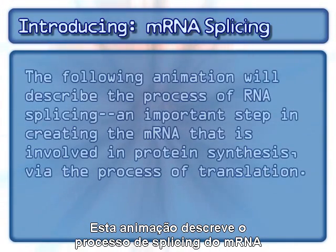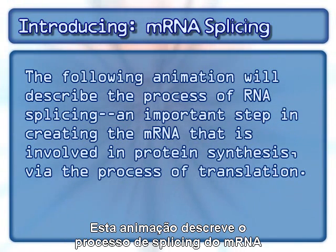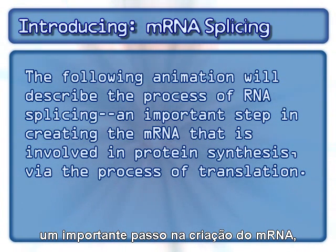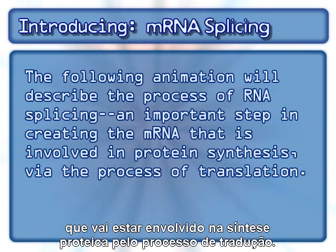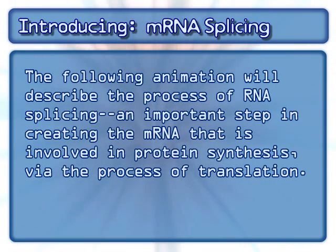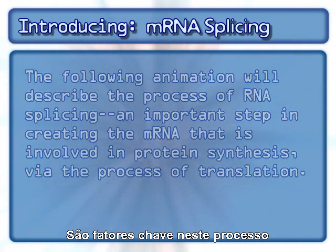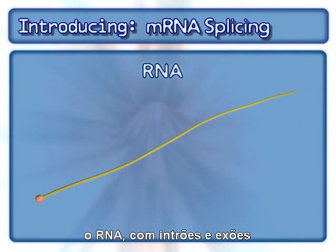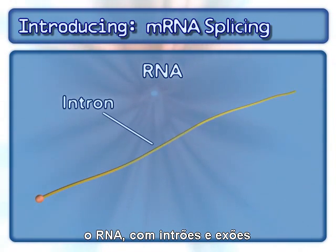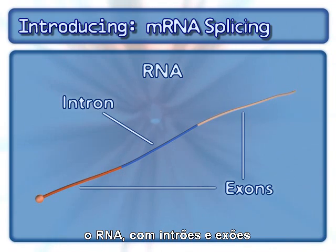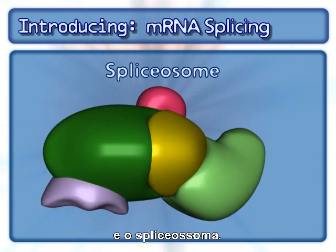The following animation will describe the process of RNA splicing, an important step in creating the mRNA that is involved in protein synthesis via the process of translation. Key factors in this process include RNA possessing introns and exons, and the spliceosome.